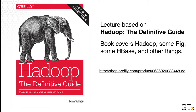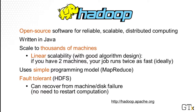Hadoop is an open source software for scalable distributed computing. It's written in Java and has a number of components. It's designed to scale to thousands of machines, to offer linear scalability in the ideal case — meaning if your computer cluster has 100 machines, your program would run 100 times as fast as when you have only one machine. Programs that run on Hadoop use a simple programming model called MapReduce, which we will go through in more detail in the next video.